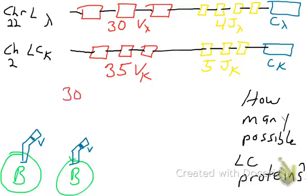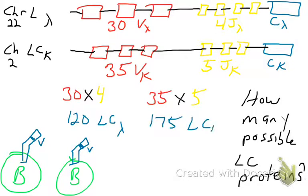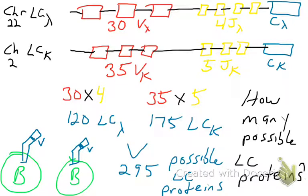In the light-chain lambda gene, there are 120 different possible combinations of variable and joining gene segments. For the light-chain kappa gene, there are about 35 times 5, which is 175 different combinations. Adding those together gives you 295 possible light-chain proteins that a B cell can choose from.